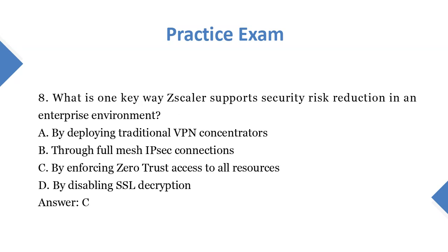Question 8: What is one key way Scalar supports security risk reduction in an enterprise environment? A. By deploying traditional VPN concentrators. B. Through full mesh IPSEC connections. C. By enforcing Zero Trust access to all resources. D. By disabling SSL decryption. Answer: C.